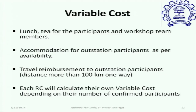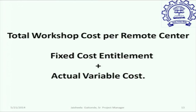Under variable cost, we have food, accommodation, and travel reimbursement. All remote centers must arrange lunch and tea for participants and workshop team members. Accommodation for outstation participants may be arranged if available. Travel reimbursement is for outstation participants where the distance between the participant's institute and the remote center is more than 100 kilometers one way. Each remote center will calculate their own variable cost depending on their number of confirmed participants.